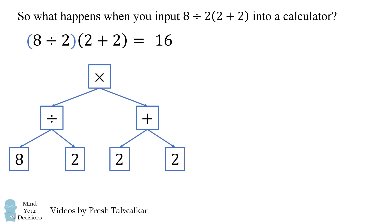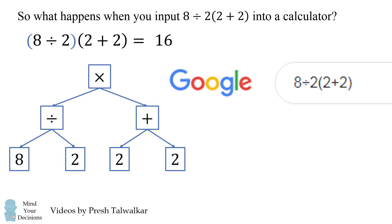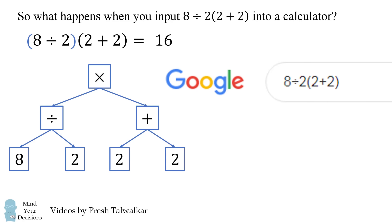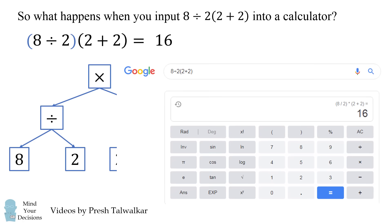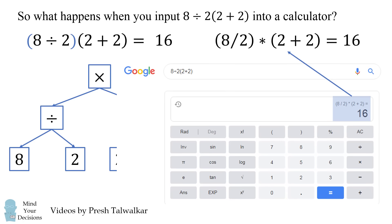Just to give you an example, let's input this expression into Google. How does it parse this expression? It gives the answer of 16, and if you look very closely, it parses it exactly like the binary expression tree on the left. This is how most calculators and programming languages will interpret this expression.